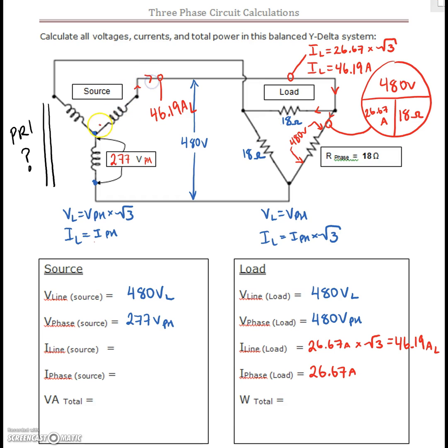And there's only one path for that current to flow through this winding here. So the current on the phase is going to be also equal to 46.19 amps as well. We've got 46.19 amps on the line. And we can see here that based off of this equation, our phase and our line currents are identical.